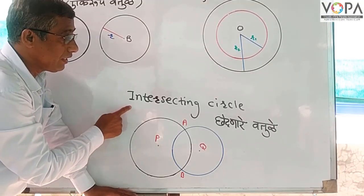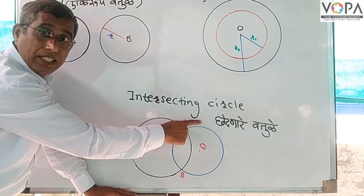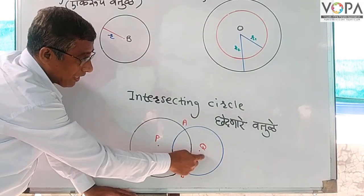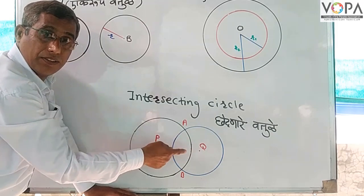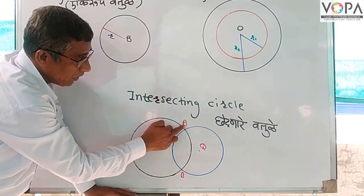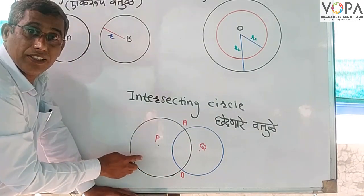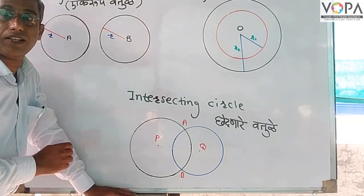Intersecting circles — in Marathi called 'eka mekana chedanare vartul': P and Q are the centers of two circles that intersect each other at points A and B. So we say that these two circles are intersecting circles.